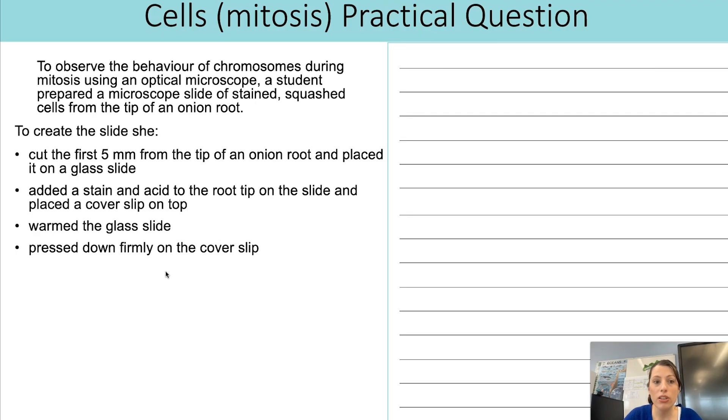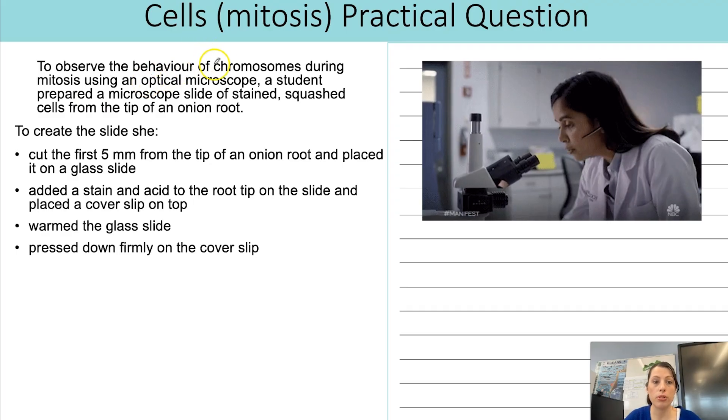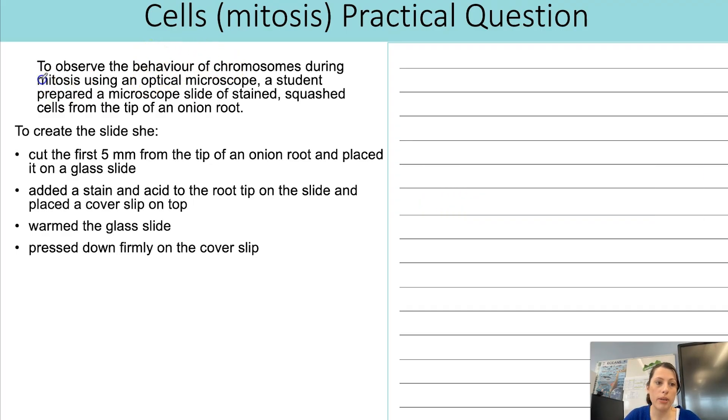Next then we move on to a practical question. So the first step I always go through is reading and highlighting the key points. So to observe the behavior of chromosomes during mitosis an optical microscope was used. So we're thinking about mitosis here. A student prepared a microscope slide of a stained squashed cell from the tip of an onion root. So this is one of the required practicals.